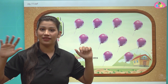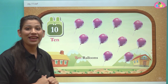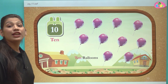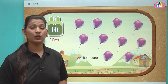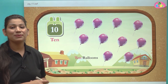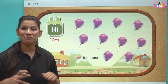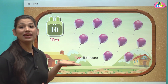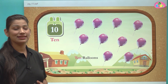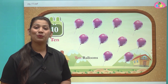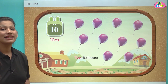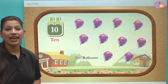We also have 10 toes. Five fingers in one hand and five in the other makes up 10. In a football team there are a total of 10 players. You know how to write the number name of 10 — we write it as T-E-N.